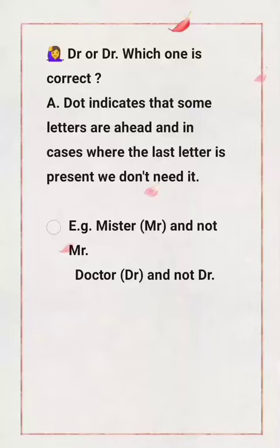Take the word 'Mister' — M-I-S-T-E-R. If I were to put a dot after 'Mr', that would not be grammatically correct. Why? Because the last letter is present. A dot indicates that some letters are lying ahead, but in 'Mr', R is the last letter. Similarly, in 'Doctor', R is also the last letter. So whenever a word is shortened and its last letter is present, we do not need to put a dot.